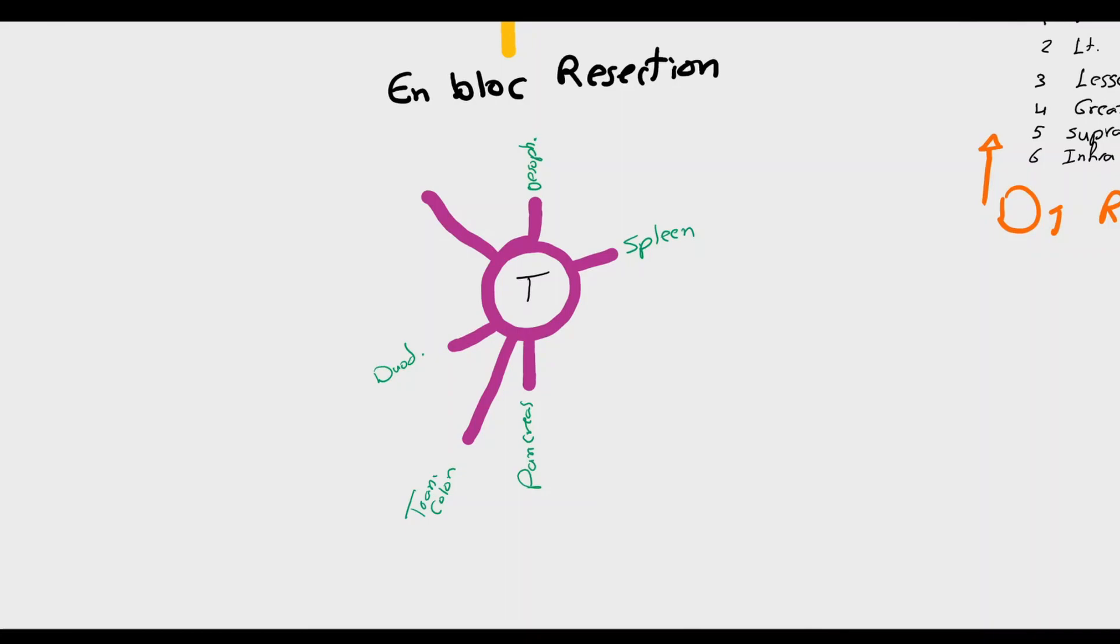The concept of en-bloc resection means removal of the tumor with the adjacent organ infiltrated. Here, dissection of the tumor itself is prohibited because tumor seeding can lead to more spread in the peritoneal space.